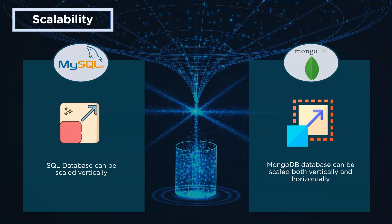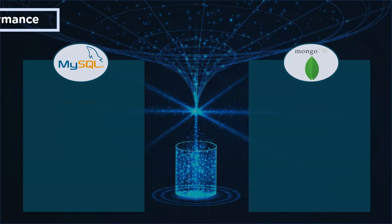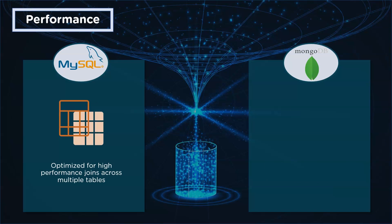Next up is scalability. SQL databases can be scaled vertically, while MongoDB can be scaled both vertically and horizontally. Horizontal scaling means adding more machines to your pool of resources, while vertical scaling refers to adding more power, such as CPU or RAM.